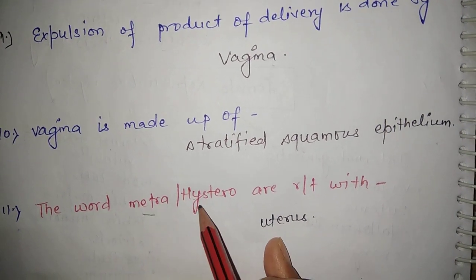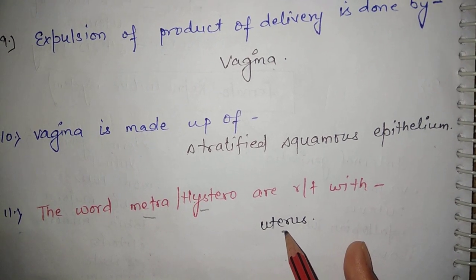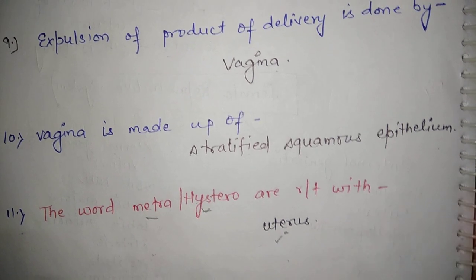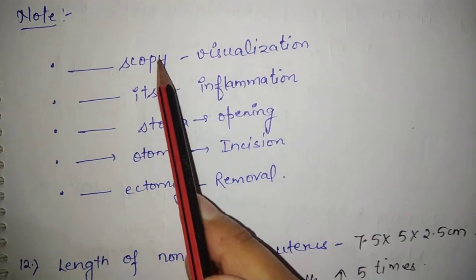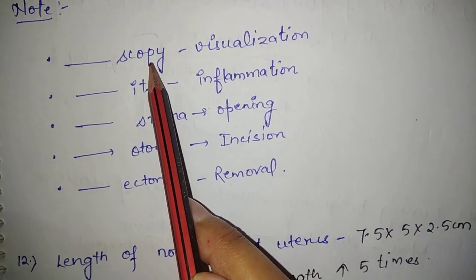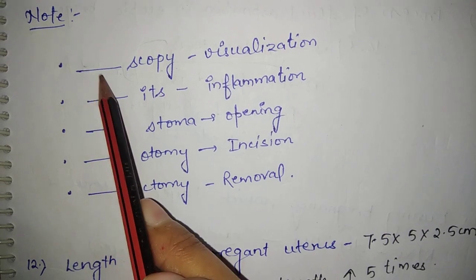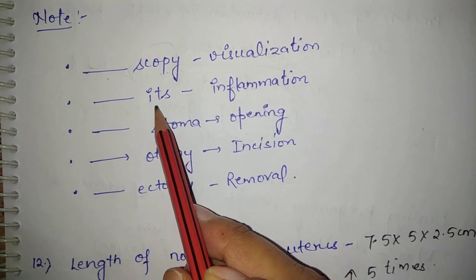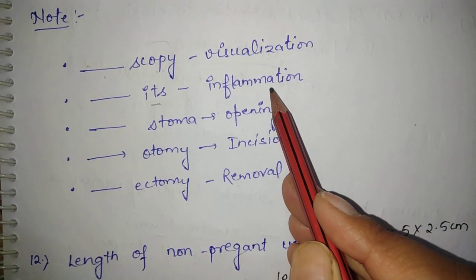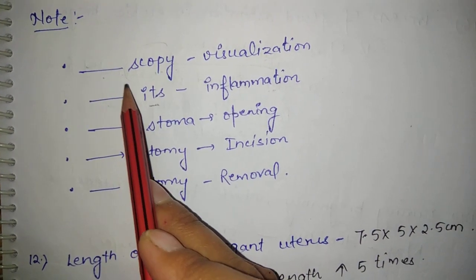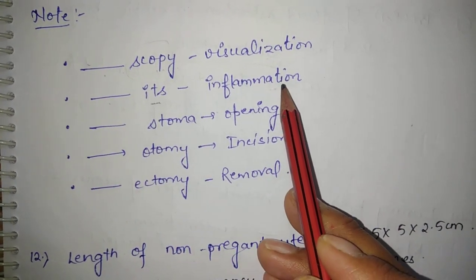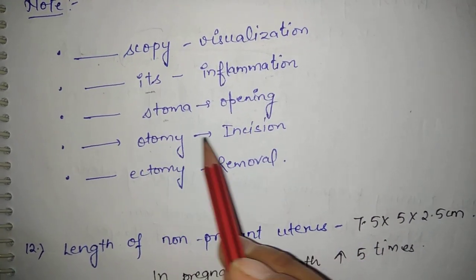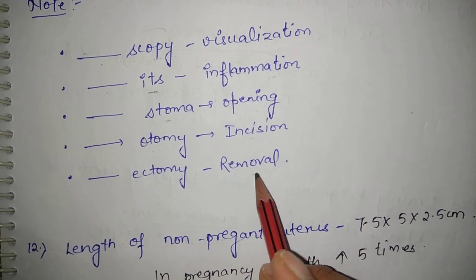Vagina is made up of stratified squamous epithelium. The words 'metra' and 'hystro' are related with the uterus. Note: if any word ends in '-scopy', for example hysteroscopy — hystro means uterus, scopy means visualization. '-itis' means inflammation, '-stoma' represents opening, '-otomy' represents incision, and '-ectomy' represents removal.